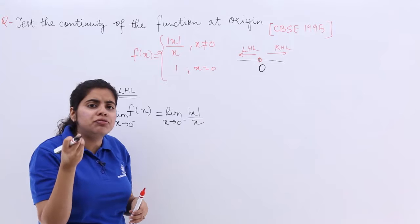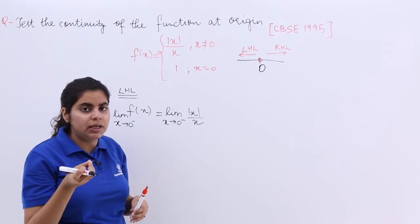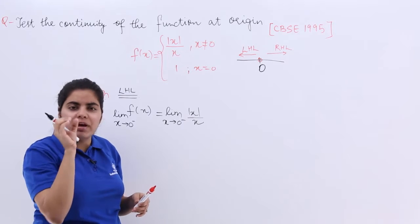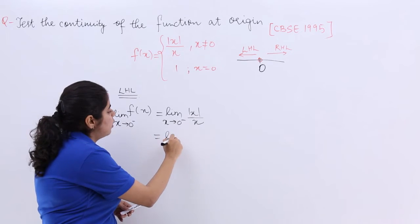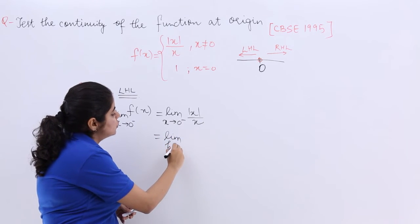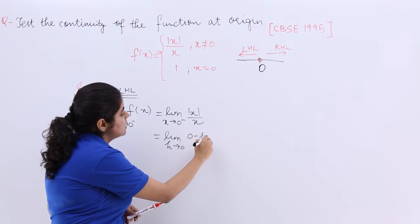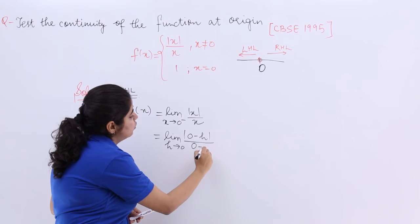And h is an infinitely small number, infinitesimally small number. A very minute number, very small number. So it becomes limit h tends to 0 this time and here it will become 0 minus h upon 0 minus h.